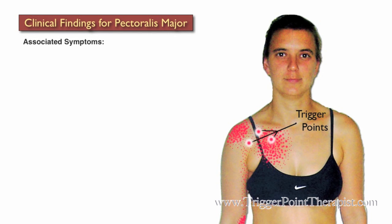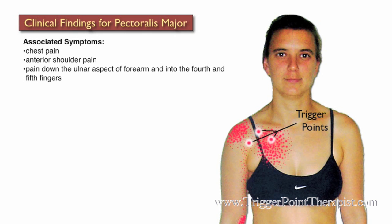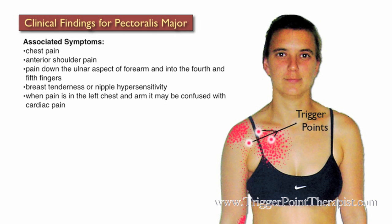The clinical findings for the pectoralis major muscle are as follows. Clients will complain of chest pain, anterior shoulder pain, pain down the ulnar aspect of the forearm and into the fourth and fifth fingers, breast tenderness or nipple hypersensitivity. If the pain is on the left side of the chest and arm, it can easily be confused with cardiac pain.